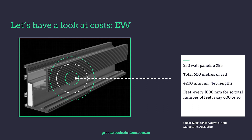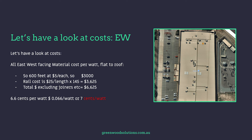Again, we have 350 watt panels, 285 of them, 600 metres of rail, 4.2 metre lengths, 145 lengths, feet every 1,000 mm — 600 feet. For all east-west flat to the roof material cost per watt: 600 feet at $5 each is $3,000; rail cost $3,625. Total excluding joiners is $6,625, effectively 7 cents a watt, because we don't need the tilt frame aspect — saving money there straight away.